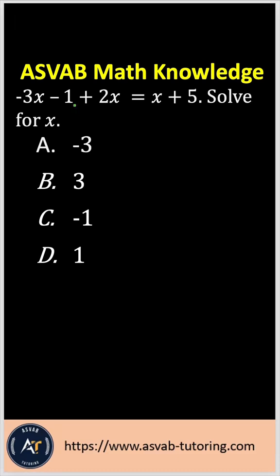In order to solve this problem, if you have an algebraic equation with multiple variables, make sure that you combine the variables first before you eliminate. If you have the same sign in the front, you add; if you have a different sign in the front, you subtract from the bigger number to the smaller number.